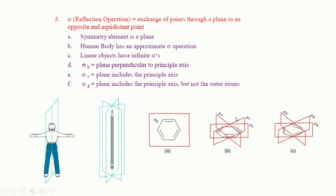A dihedral mirror plane is simply a subset of vertical mirror planes. A more rigorous definition of the difference between vertical and dihedral mirror planes is that a vertical mirror plane will contain more atoms than a dihedral one, or if they contain the same number of atoms, a vertical mirror plane will contain one of the three Cartesian axes (x, y, or z).